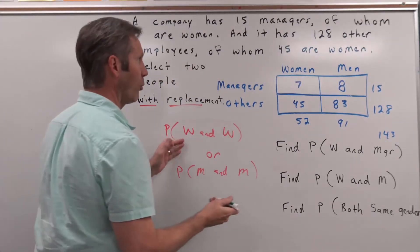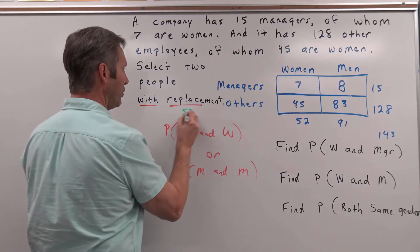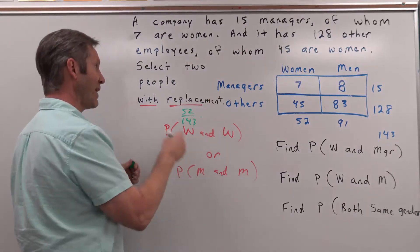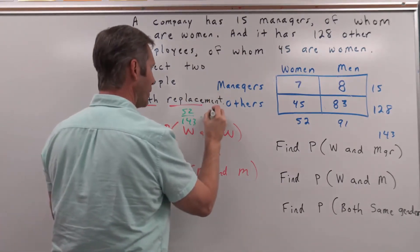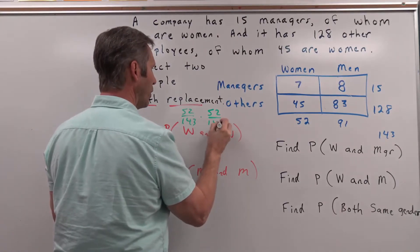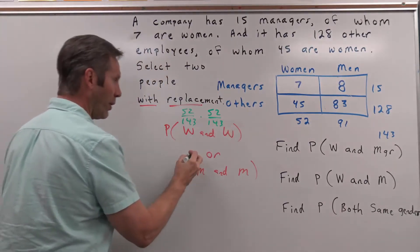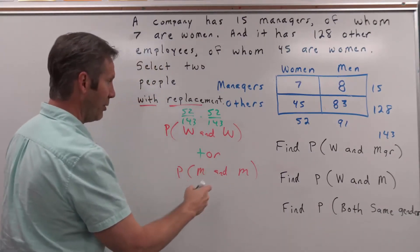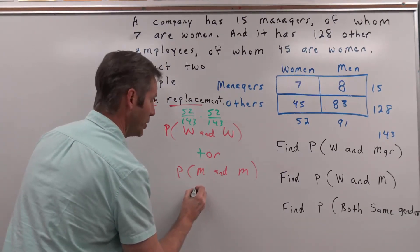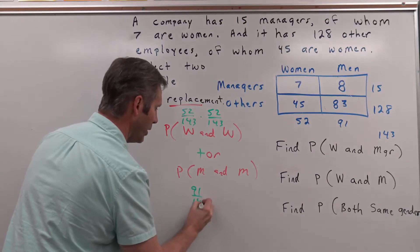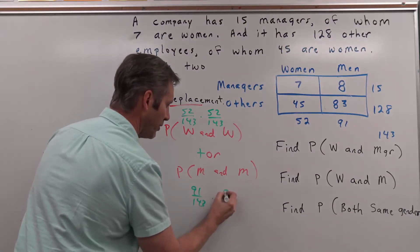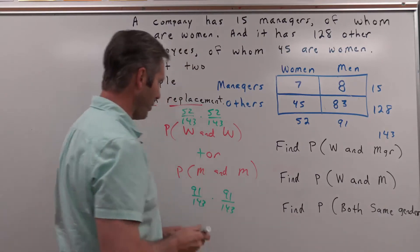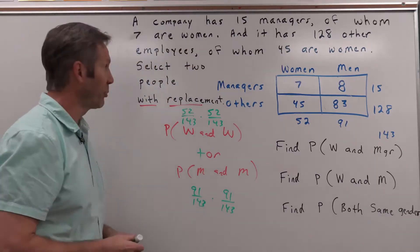The probability of getting a woman the first time is 52 out of 143. The probability of getting a woman the second time, knowing we did this with replacement, is also 52 out of 143. Or — that means we add — the probability of getting a male, which is 91 out of 143, times the probability of getting a male again, which is preserved at 91 out of 143, because we did this with replacement.